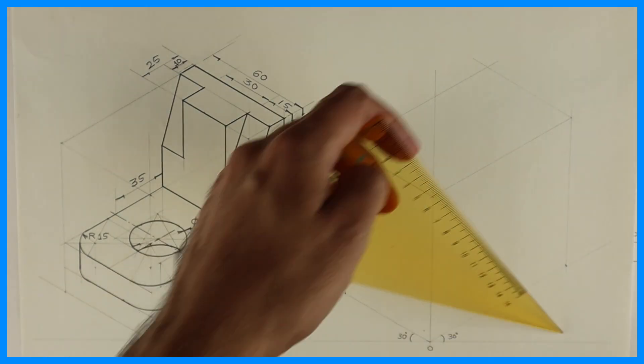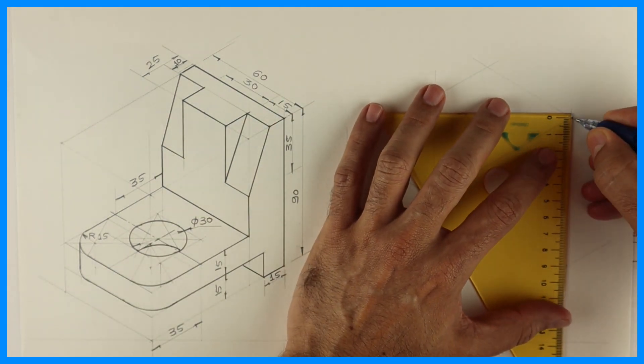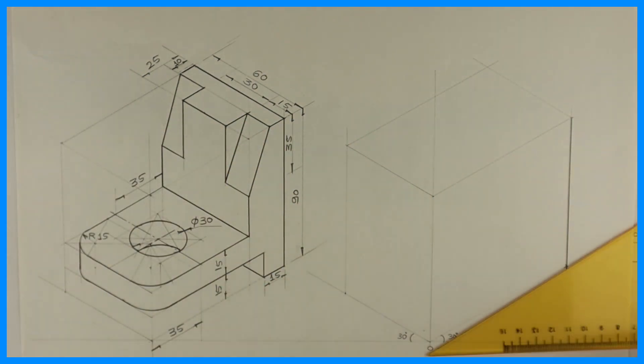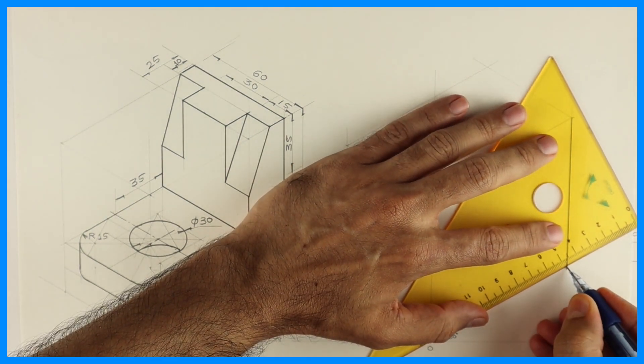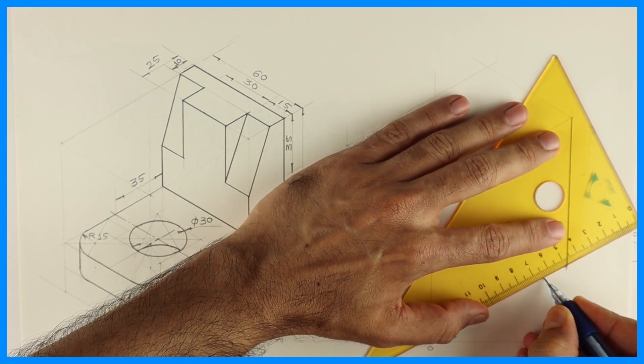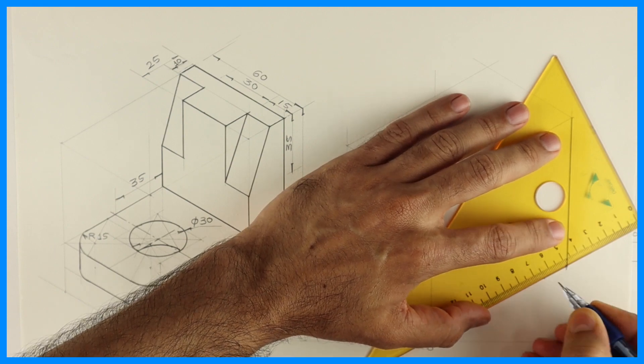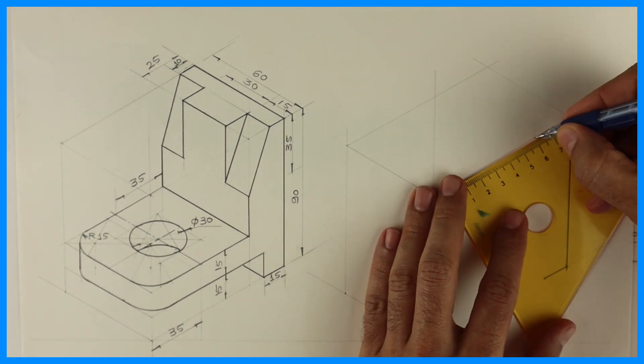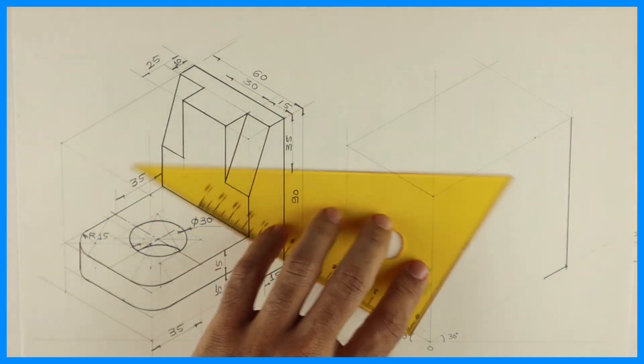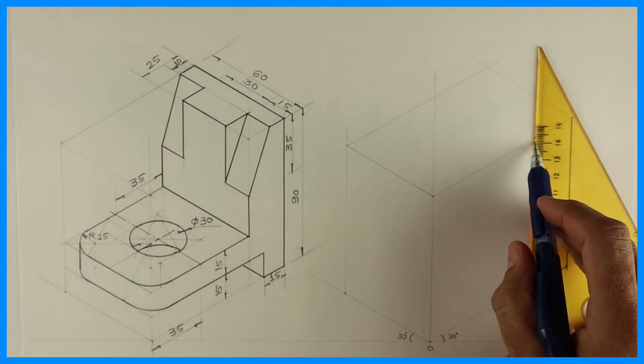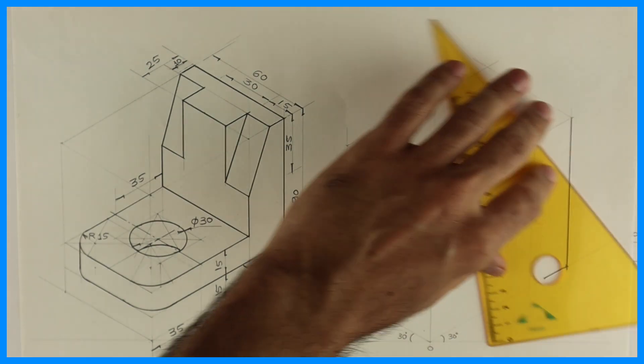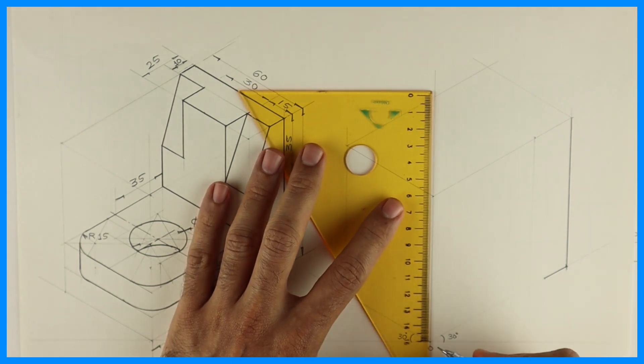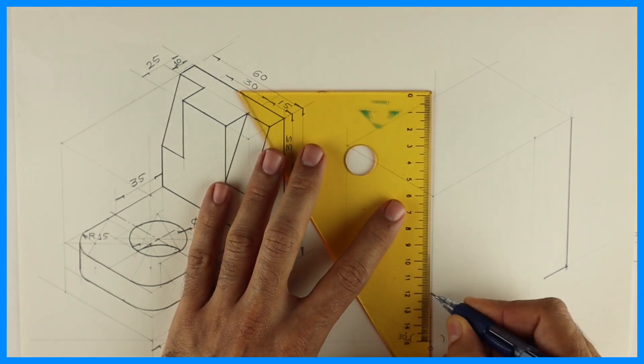After drawing layout we will start with this part. So first we will draw 90. Then how much is this? 15. Then this is 25. Then we will go down. This height is 15, 15, 30. So we will take 15, 15.